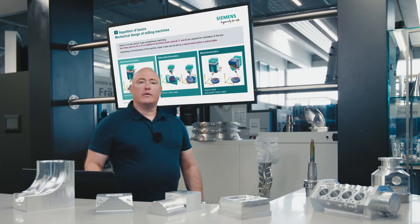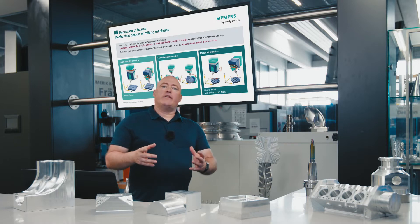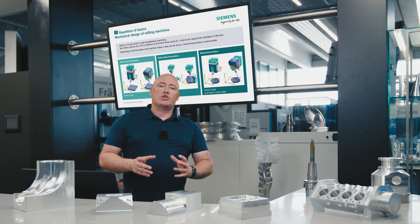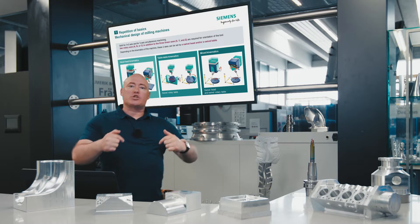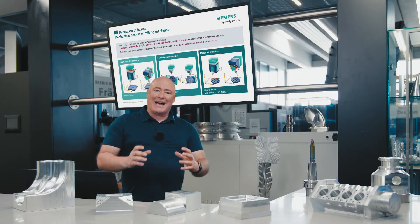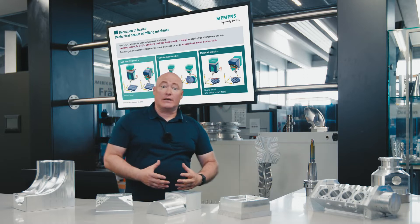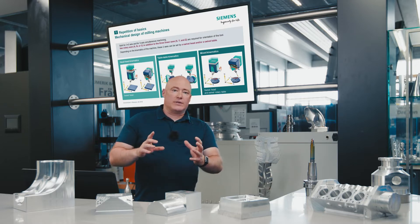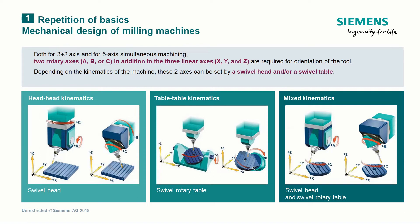Let's move on to the mechanical design of milling machines. There are three possible basic kinematic designs. The first is head-head kinematics, where all movements are performed in the head and the table remains completely immobile. The second is table-table kinematics, where the head is immobile and all movements are performed in the table only. The third is mixed kinematics, where both the head and the table execute movements simultaneously, synchronized so that all 5-axis movements can be achieved. Dynamic 5-axis machining is possible in all these constellations.